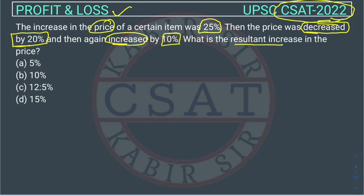What is the resultant increase in the price? So the question is asking, suppose there is an item, initially the price increased by 25%, then decreased by 20%, and then finally increased by 10%. So the final price got increased or decreased, the question is like that.